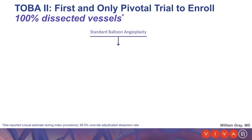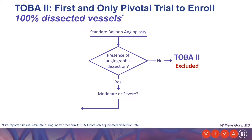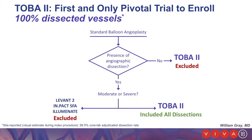It can't be emphasized enough that this is an incredibly unique trial. It is the first and only pivotal trial ever to enroll 100% dissected vessels. Specifically, patients underwent balloon angioplasty, and if the patient did not have a dissection, they were excluded from this trial. This is almost the opposite of what occurs in most other trials. If the patient did have a dissection — moderate or severe — they would have been excluded from prior trials such as Levant 2, Impact SFA, and Illuminate. But in TOBA II, all those previously excluded patients were included.